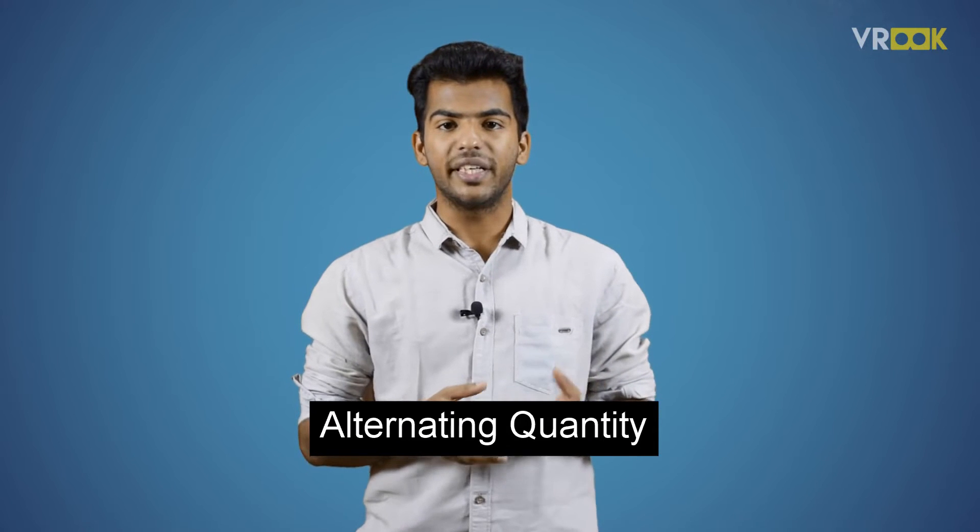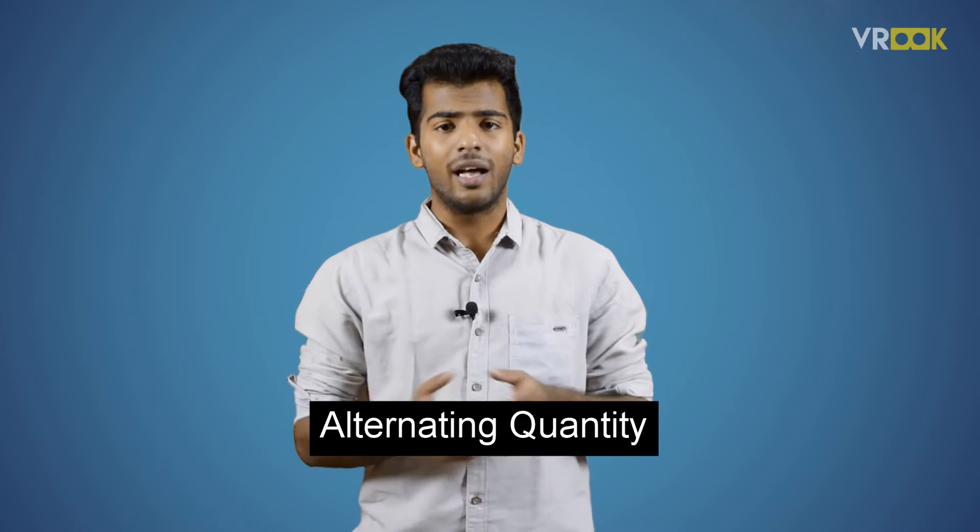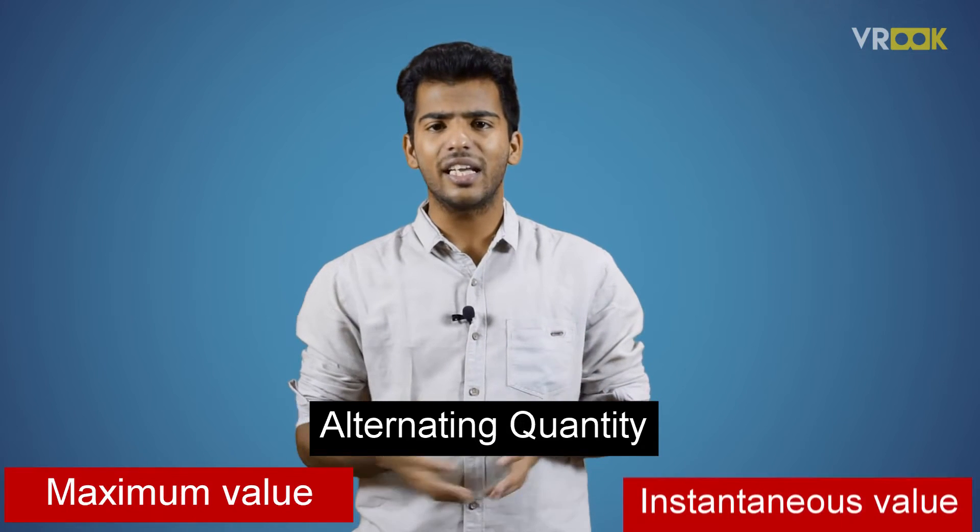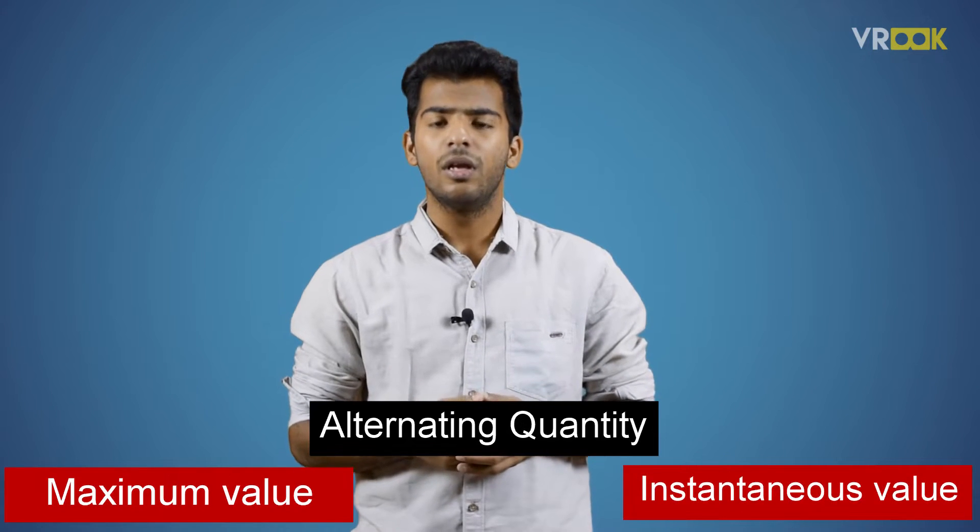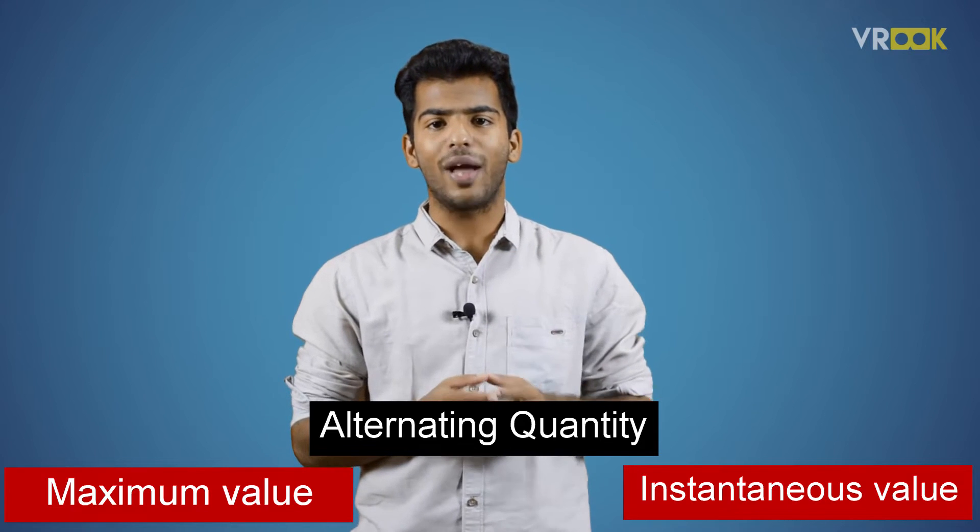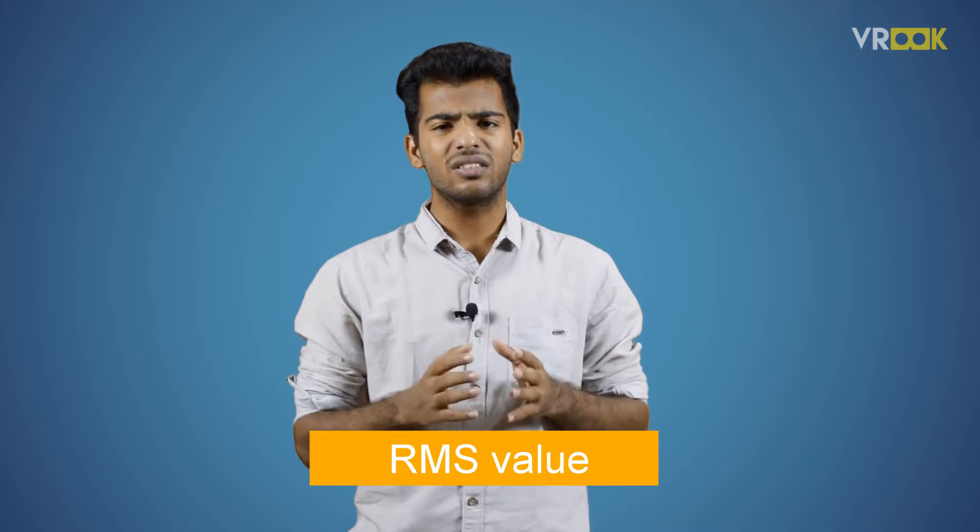The alternating quantity, voltage or current, has many different values: maximum value, instantaneous value, etc. But apart from all these, we have another important value that is RMS value. What is RMS? Let's learn more.